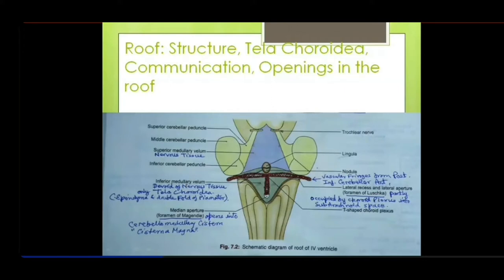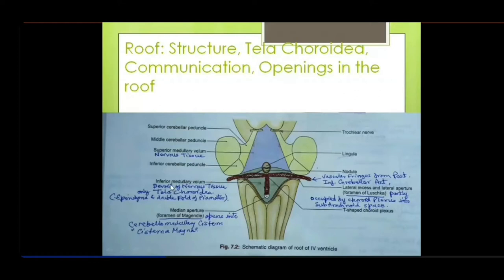The cerebellum is not the roof — it is related posteriorly to the fourth ventricle. The fourth ventricle is a closed cavity; the intraventricular system is a closed cavity in the CNS except at three points where it communicates with the subarachnoid space through foramina. On the dorsal side, the roof is formed by a thin layer of nervous tissue divided into two parts: the upper portion is the superior medullary velum and the lower portion is the inferior medullary velum.